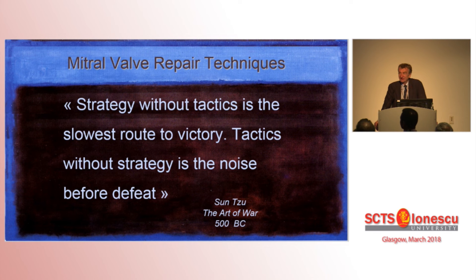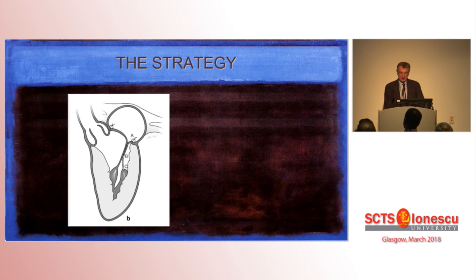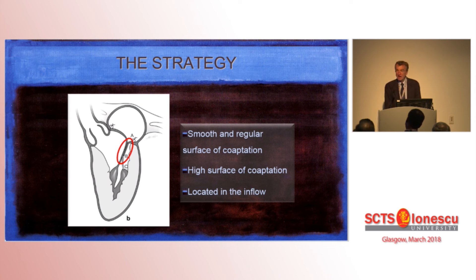Your strategy: if you don't have any tactics, it's the slowest route to victory — otherwise, it's the noise before defeat. The strategy is simple: you should have one goal, and that goal is to remodel a posterior surface of coaptation that is smooth, regular, high, and located in the inflow. How you achieve this is less important — the most important thing is having a clear and good goal.